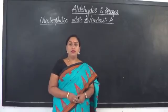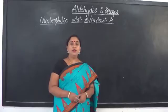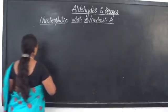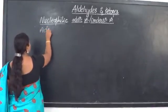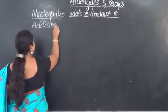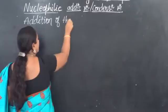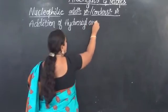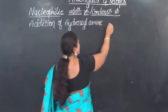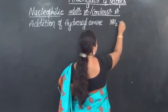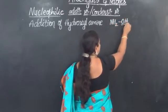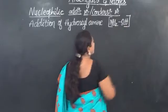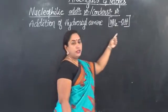In this video lecture, let us learn regarding the addition reaction of aldehydes and ketones with hydroxyl amine. The formula of hydroxyl amine is NH2OH — 'hydroxyl' because of the presence of OH, and 'amine' because of the presence of NH2. So the formula for hydroxyl amine is NH2OH.